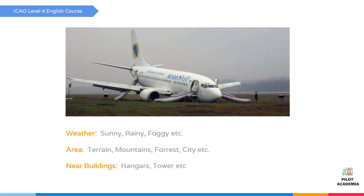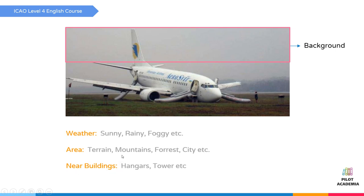Then we continue with the background — you can talk about weather, area, and nearby buildings. In the background, the weather looks very foggy. It looks like there are some trees right behind the aircraft, maybe some forest around there. I can't see any buildings; possibly it is far from the apron and near to a runway.